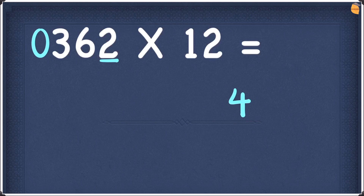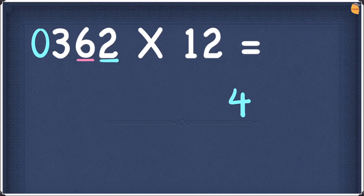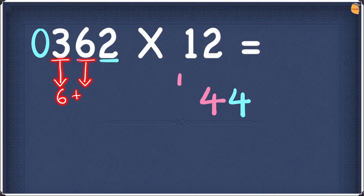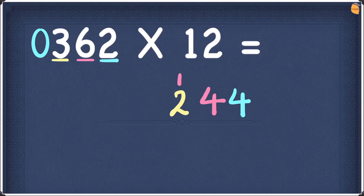Next digit is 6. Double 6 gives you 12. Add this to the number on the right hand side, which is 2. 12 plus 2 is 14. Write the 4 and take the 1 as a carry. Next digit is 3. Double 3 gives 6. Add this to the next digit, which is also 6. 6 plus 6 is 12. Write the 2 and take the 1 as a carry.